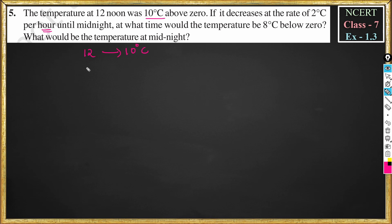at 1 pm that is 1 o'clock afternoon, this will become 10 minus 2 degrees because it decreases at the rate of 2 degrees Celsius per hour, that is equal to 8 degree Celsius. Similarly for 2 pm it decreases 2 degrees again, that is 8 minus 2, which becomes 6 degree Celsius. So this will continue until midnight.